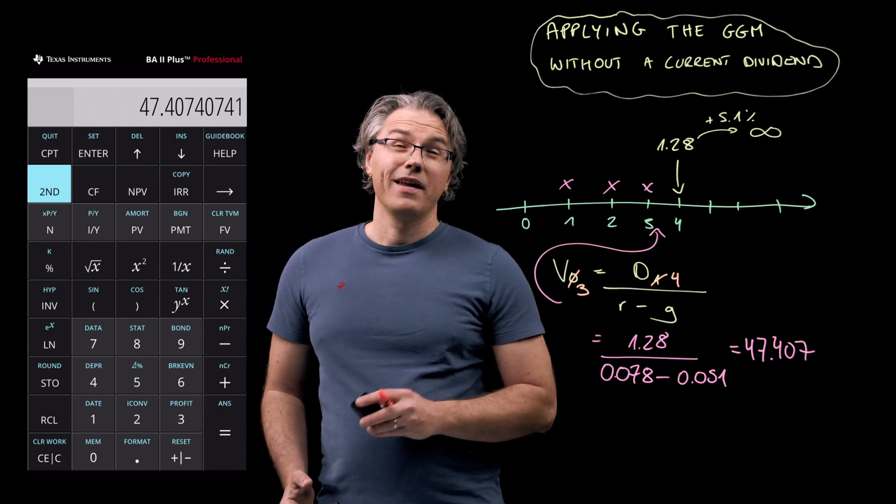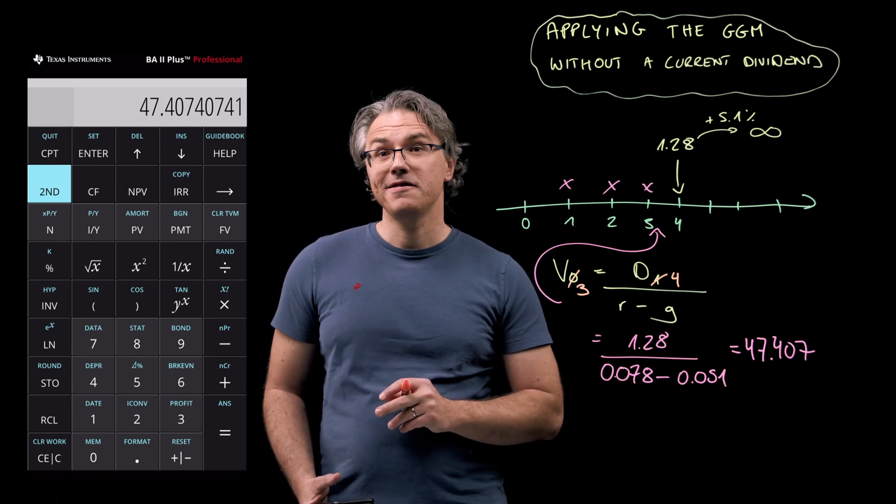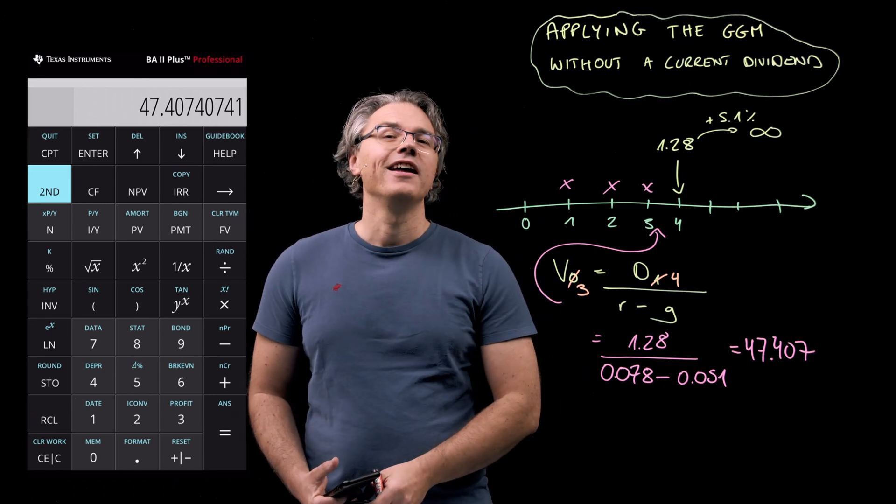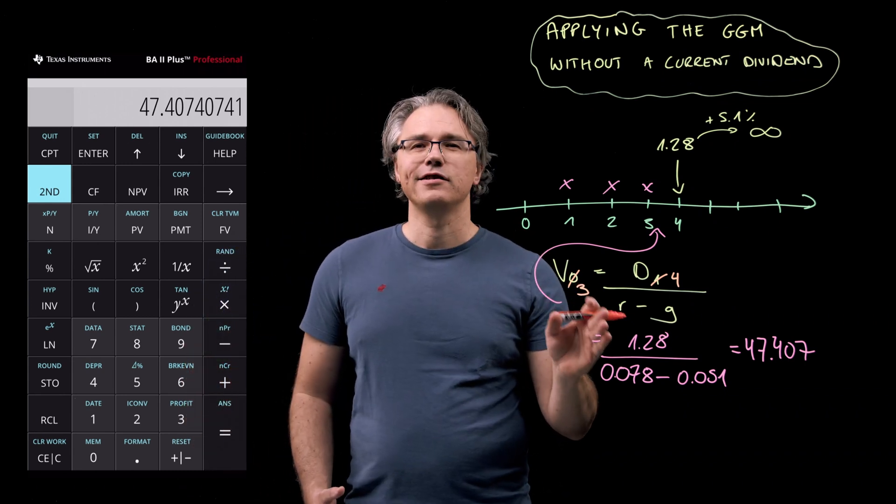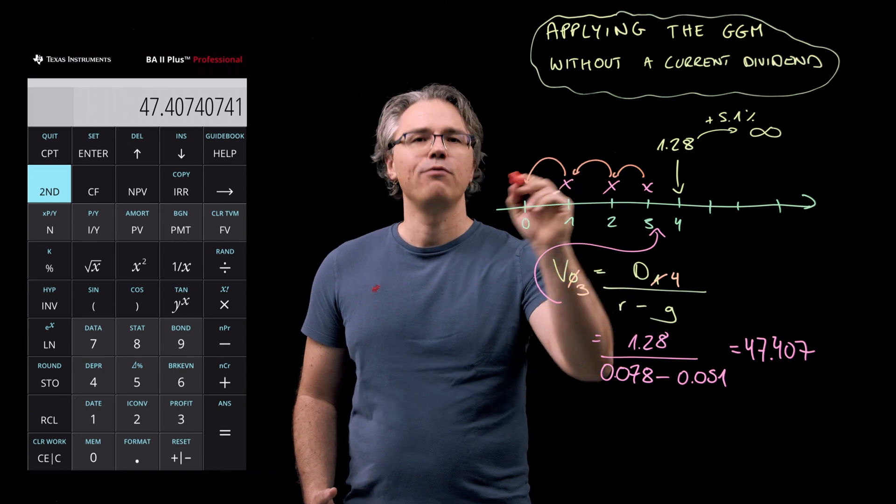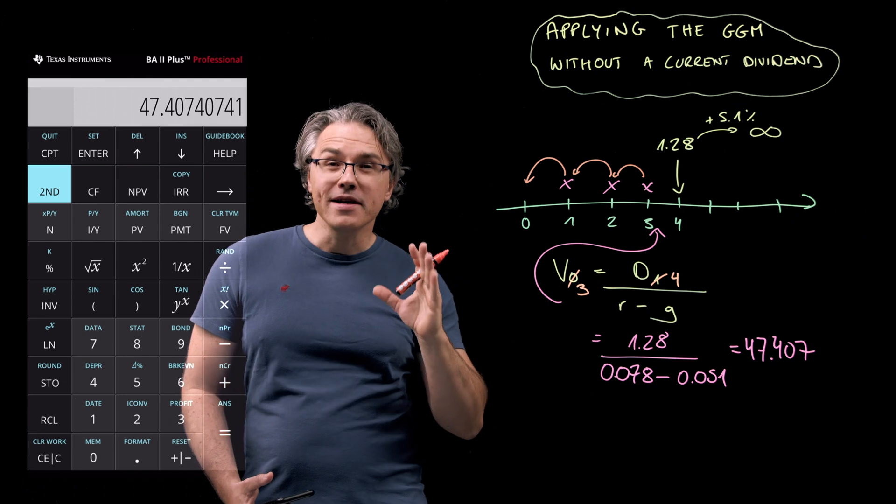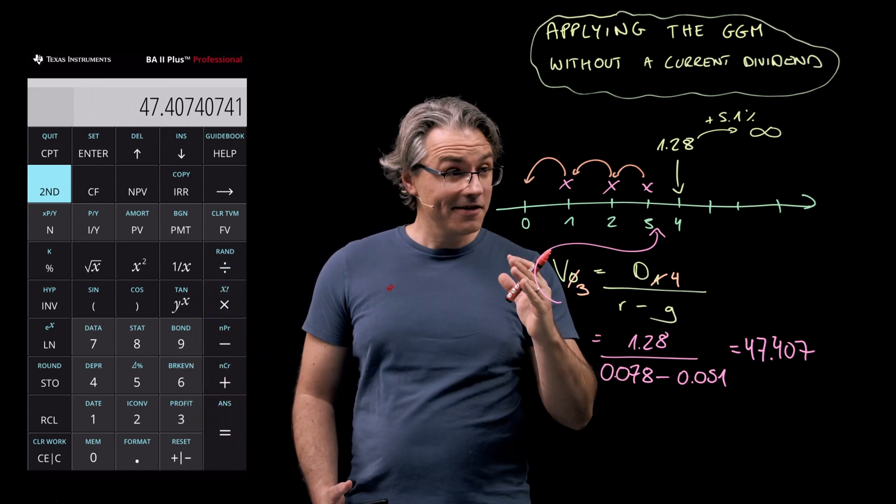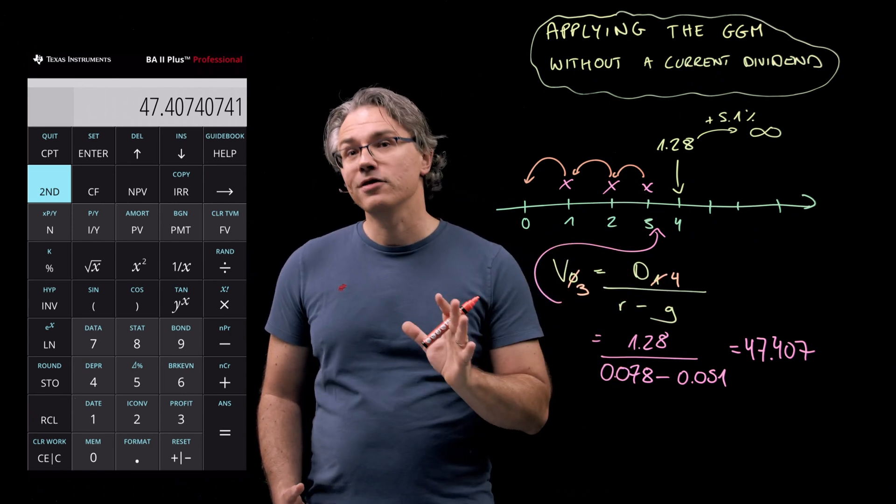So the final step is to take this number and turn it into a number expressed as at time 0. And we do this simply by discounting it over 1, 2, 3 periods. And this is where many people make the really big mistake of discounting over 4 periods because they incorrectly place this result on the timeline as belonging at time 4.